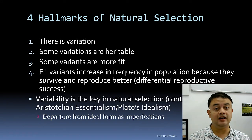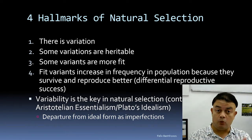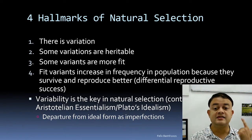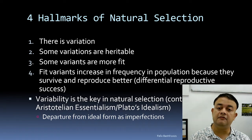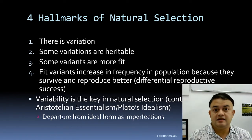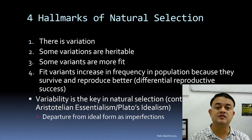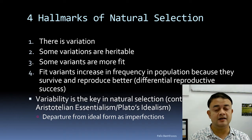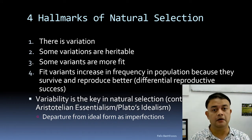The four hallmarks of natural selection: first, variation exists and is really important. Second, some variations are heritable — not all variations are heritable. For example, whatever happens to your body during your lifetime is generally not heritable. But if you are born with certain alleles, those heritable variants can be passed on to offspring — eye color, hair color, skin color, even intelligence are all heritable.